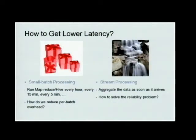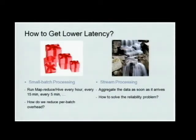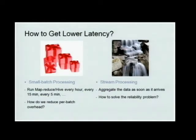In order to solve this problem, we thought about two different directions. The first direction is basically small batch processing; the second direction is called stream processing. Small batch processing means making a lot of very small MapReduce jobs — instead of running a job every 24 hours, we run a job every hour, every 10 minutes, or every 5 minutes, which can approximate the real-time requirement for our users.